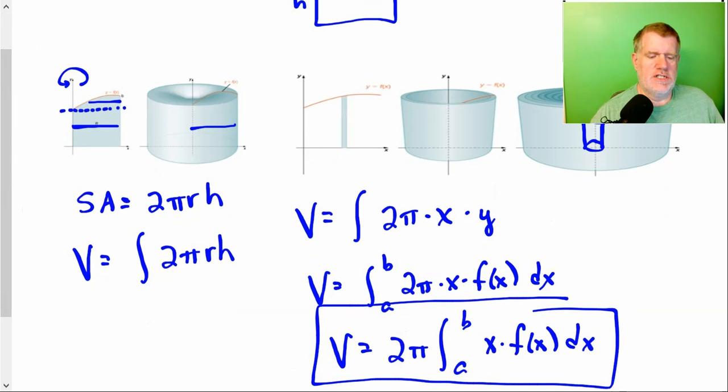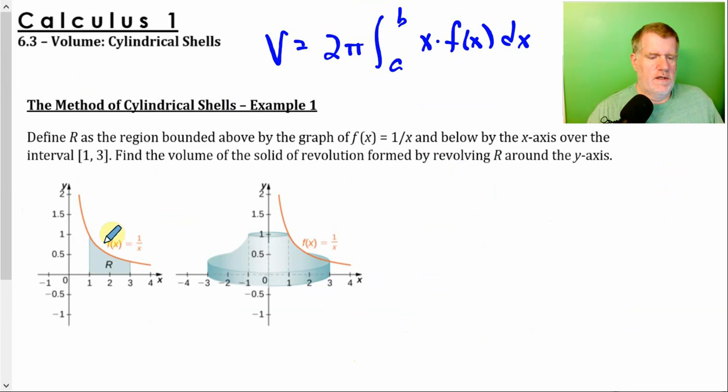All right, let's use it. Here's our region from 1 to 3. We're rotating around the y-axis. It's going to represent the outside of the shell of our cylinder. So the formula is this, 2π. We're going from 1 to 3. That's not 3. That's 3 right here. We're going from 1 to 3.